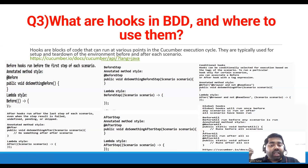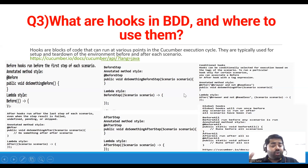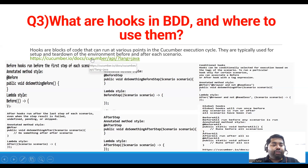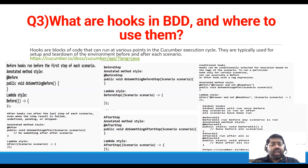For conditional hooks, you can associate a Before or After hook with a tag expression — for example, passing parameters like 'browser' or 'not headless'. We also have global hooks: BeforeAll runs once before any scenario, and AfterAll runs after all scenarios are complete. For practical examples, refer to the Cucumber documentation and explore the hooks concept hands-on.